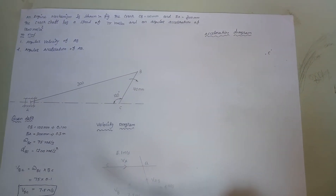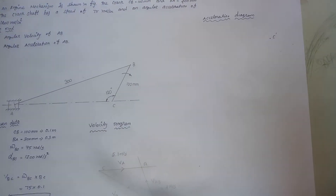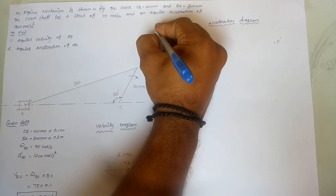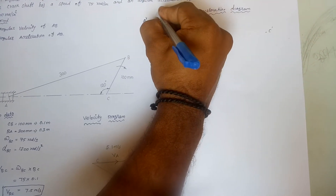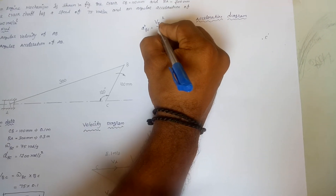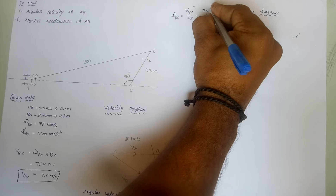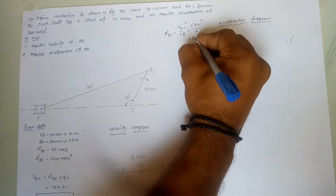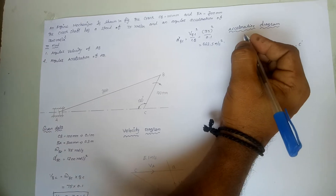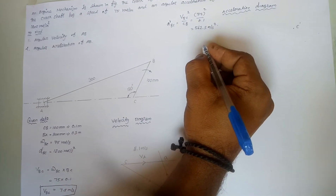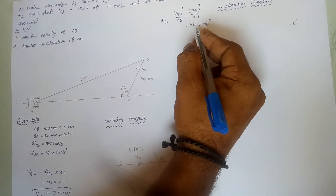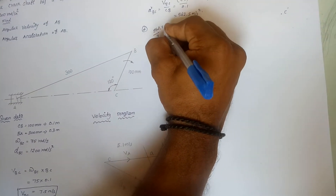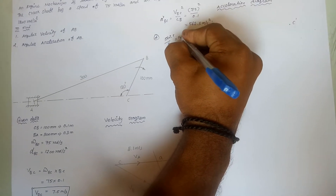We know that the radial component of the acceleration of B with respect to C. Here, A radial BC equals velocity of BC squared divided by BC, equal to 7.5 squared divided by 0.1, equal to 562.5 meters per second squared. Note that 562.5 divided by 4 equals approximately 140 meters per second squared after scale reduction.